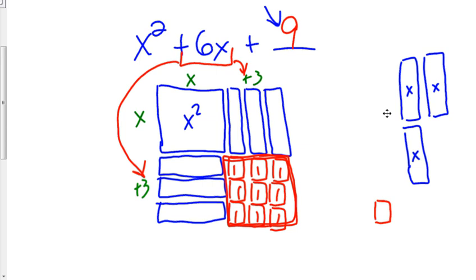And then this can be written as x plus three squared. When you factor two numbers that multiply to be nine and add to be six are three and three. So x plus three squared. That's going to help us when we get to these problems.